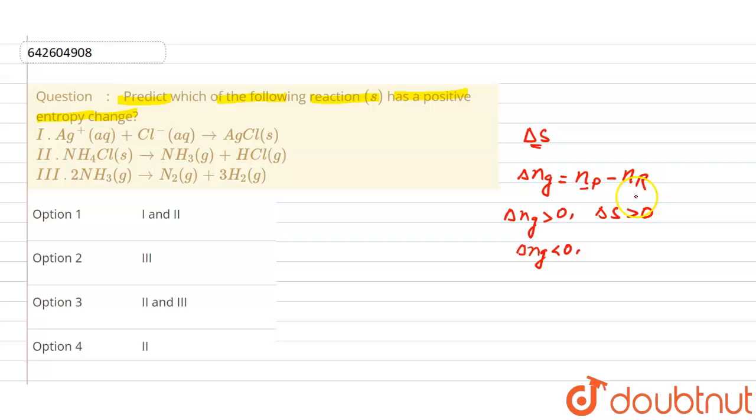Negative means number of moles of reactant is greater and product is less, so that means number of species are decreasing, so degree of randomness also will be decreased. So we'll say delta s will be negative. Now use this expression here.